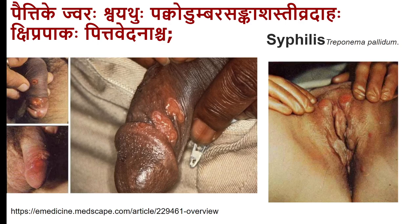Pittaja Upadamsha presents with Jvaraha (fever), Shvetuhu, Pakva Udumbara Sankasha (resembling a ripe fig), Tivra Daha (burning), Kripra Pakva (rapid suppuration), Pitta Vedana. The patient presents with a febrile episode, a painful purulent ulcer with signs of inflammation and pus formation. This is typically seen in syphilis, produced by Treponema pallidum. Syphilis incidence has reduced remarkably compared to earlier days.